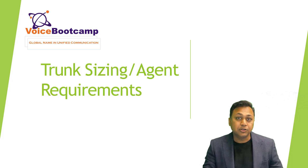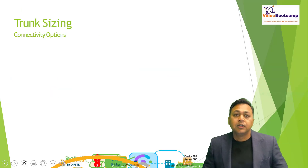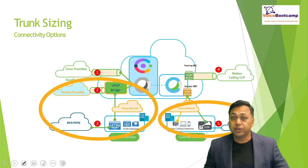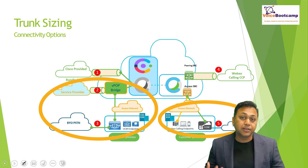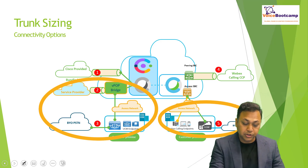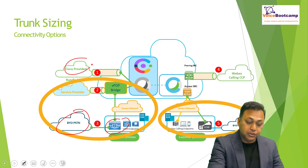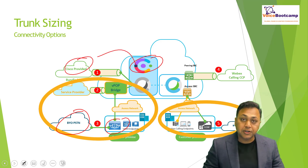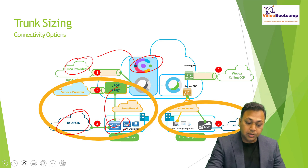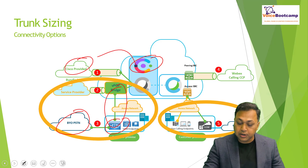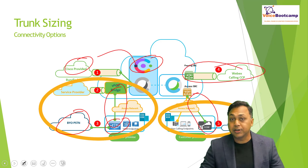To ensure that our network is designed to handle the capacity, you could have more than one type of trunk already established, and you may not even know it. For example, there is a trunk between your service provider and your Call Manager, there could be a trunk between the Cisco provider and your contact center, and there's a trunk between your POP with your Call Manager.